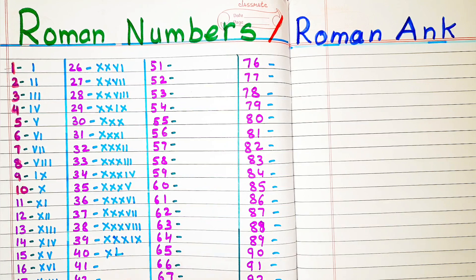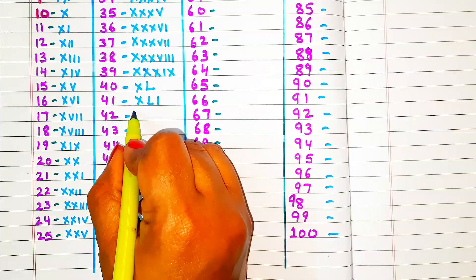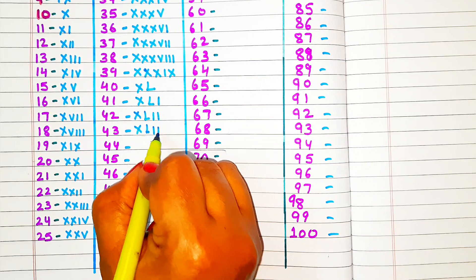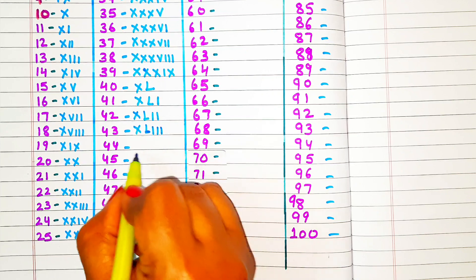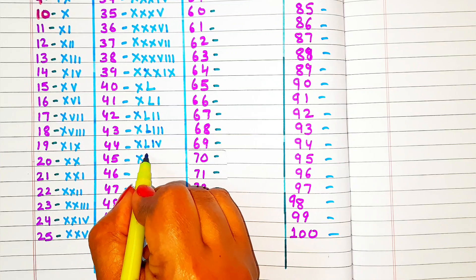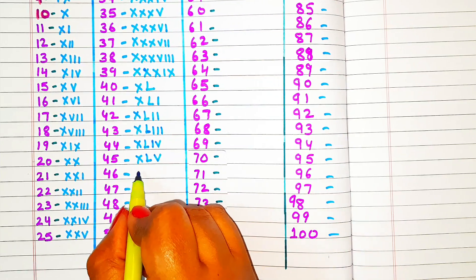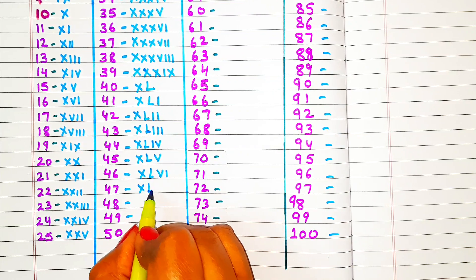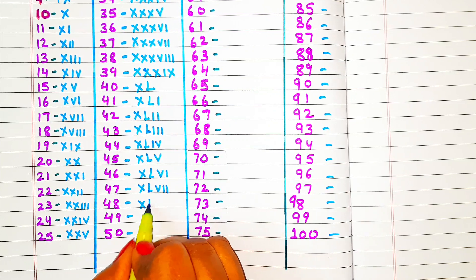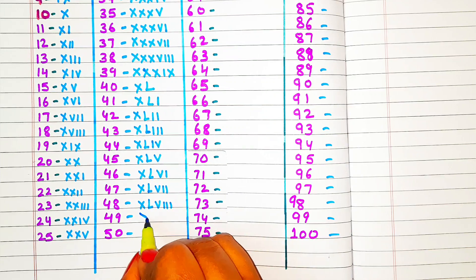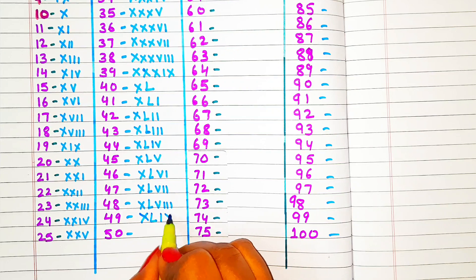41: XLI. 42: XLII. 43: XLIII. 44: XLIV. 45: XLV. 46: XLVI. 47: XLVII. 48: XLVIII. 49: XLIX. 50: L.